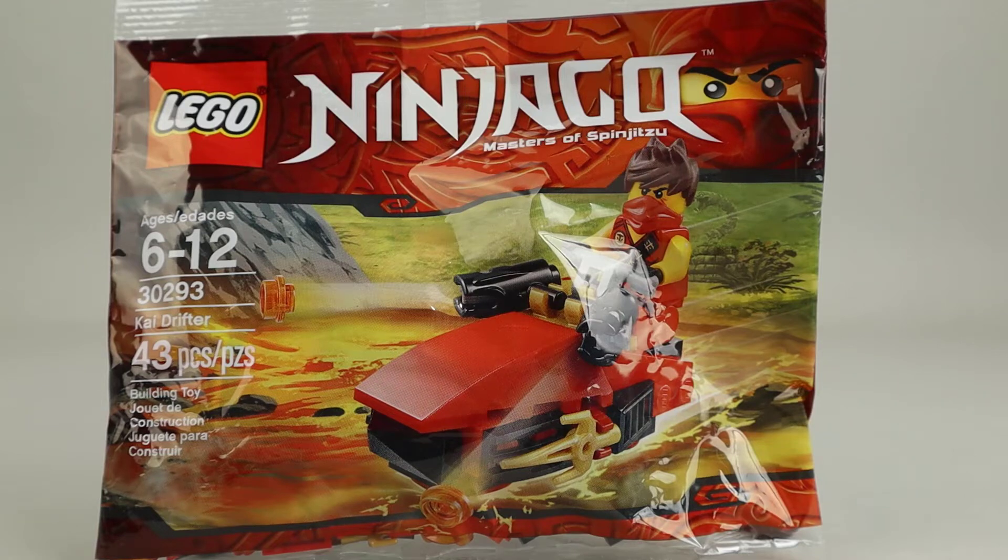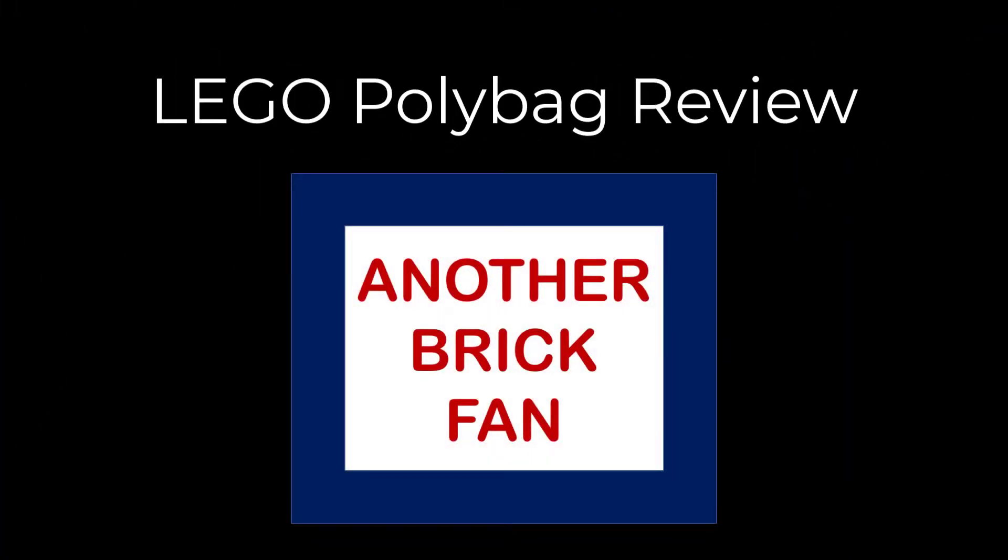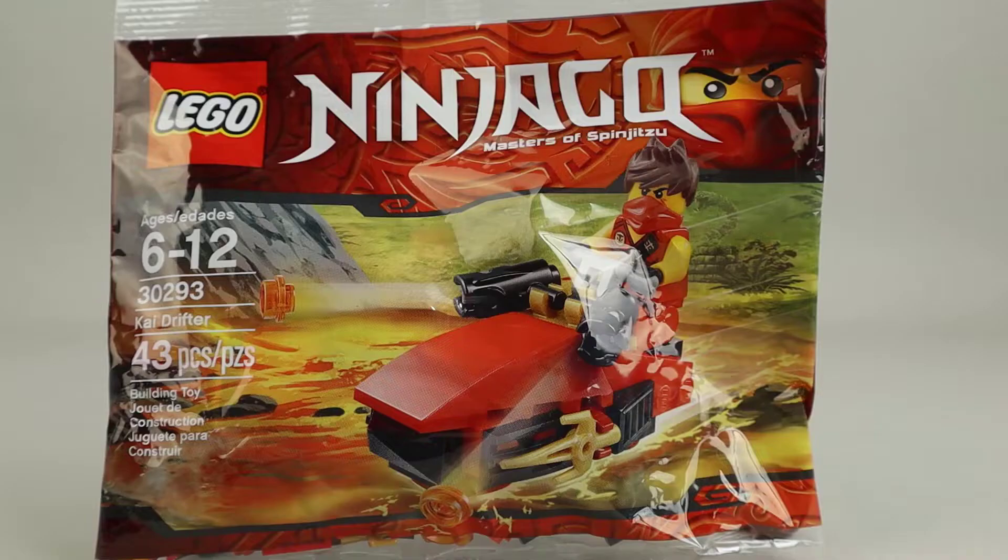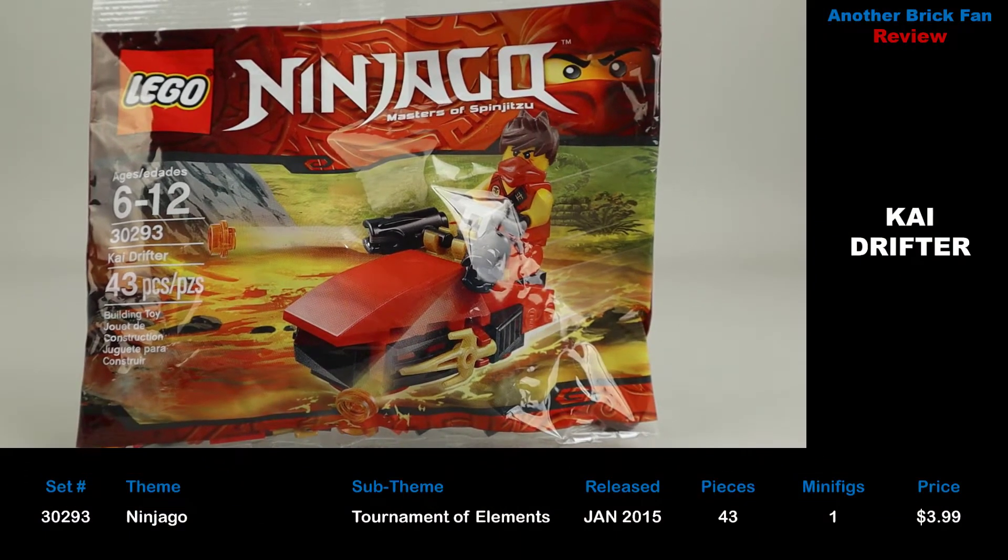Another brick fan with a Ninjago polybag, this is Kai Drifter. This is set 30293, was released in January 2015.